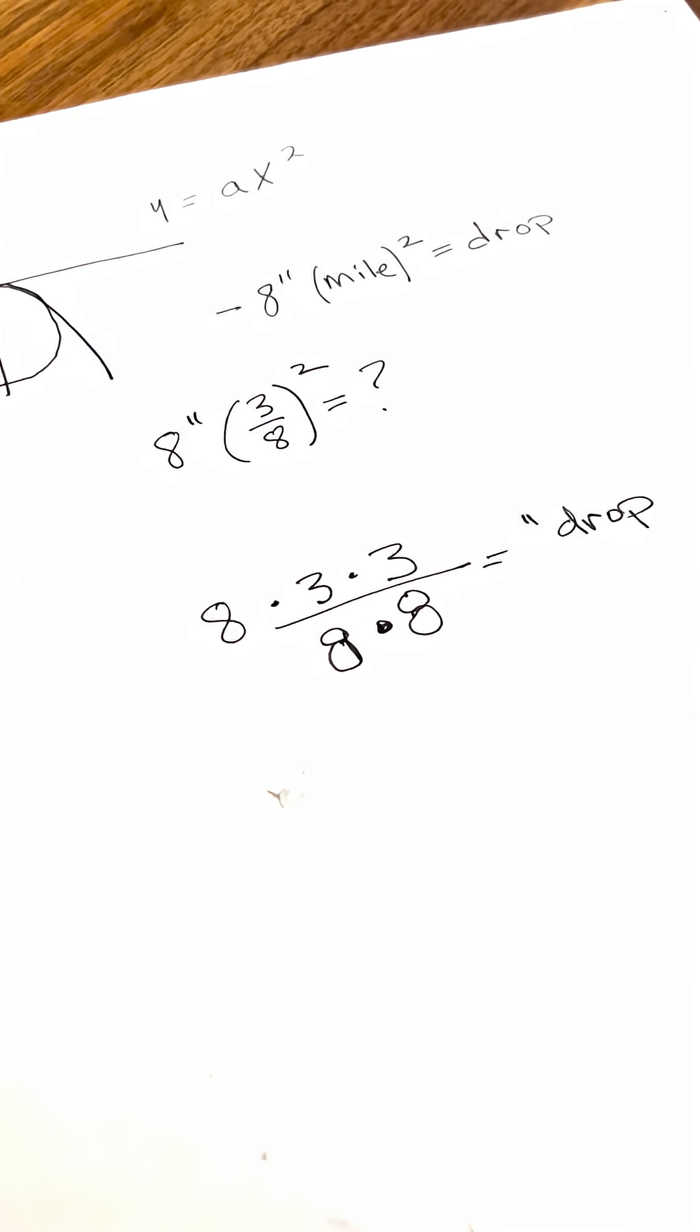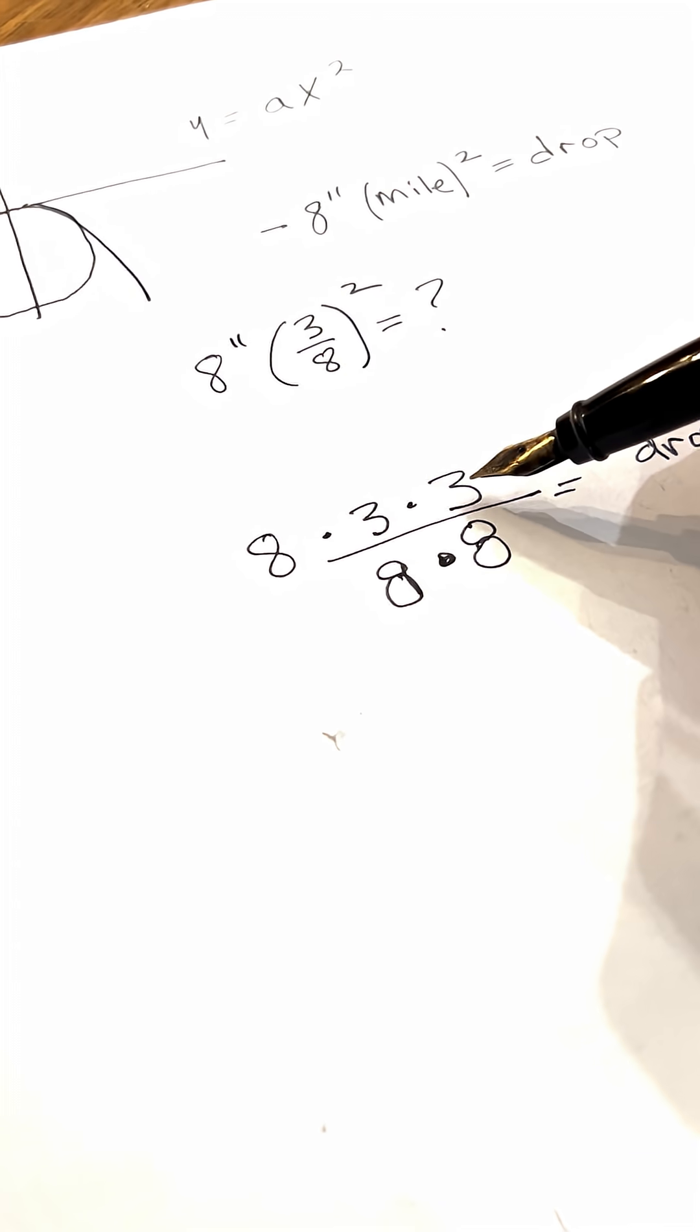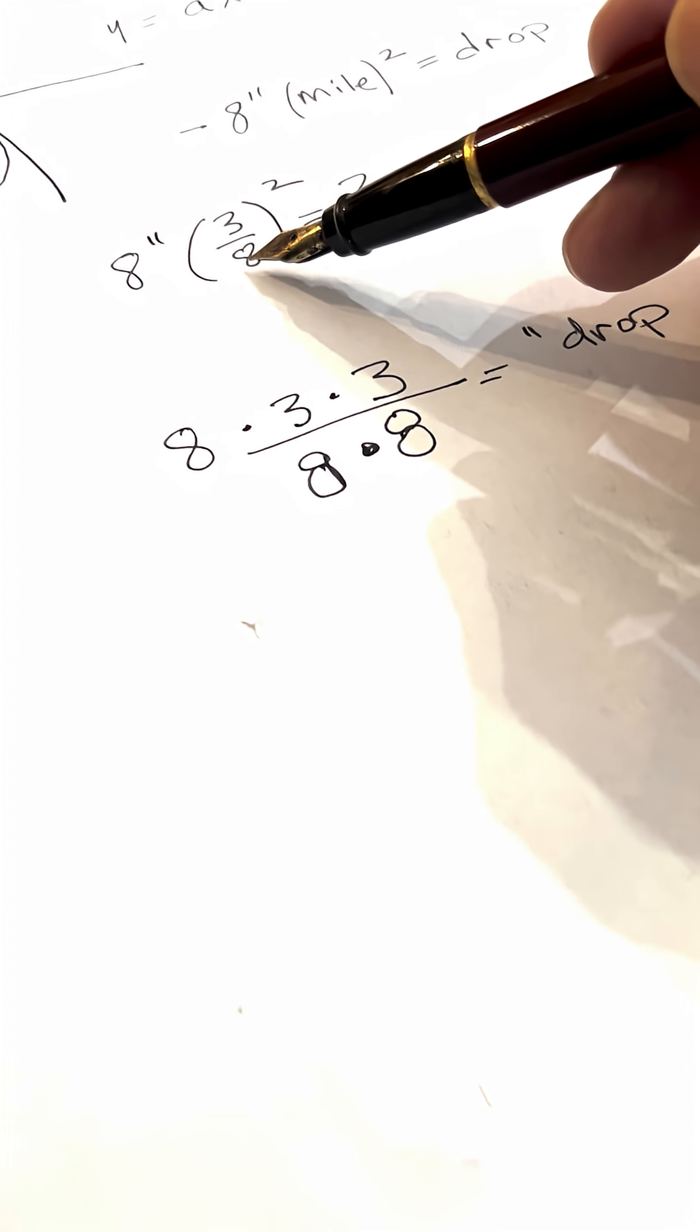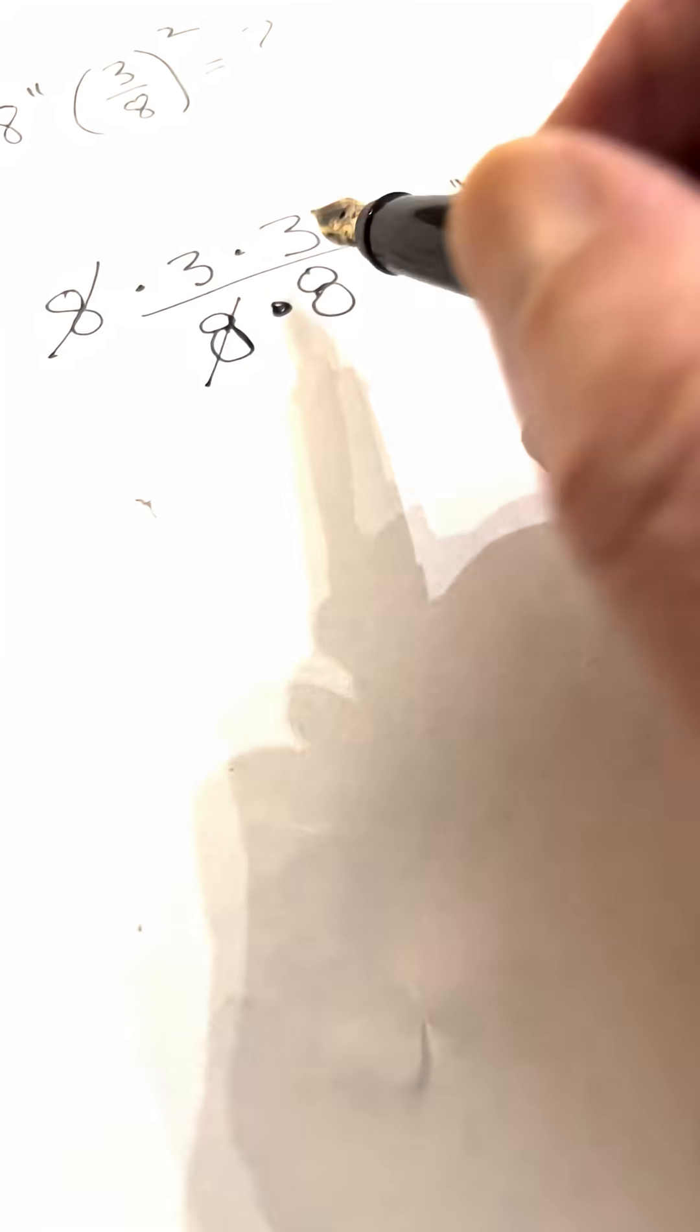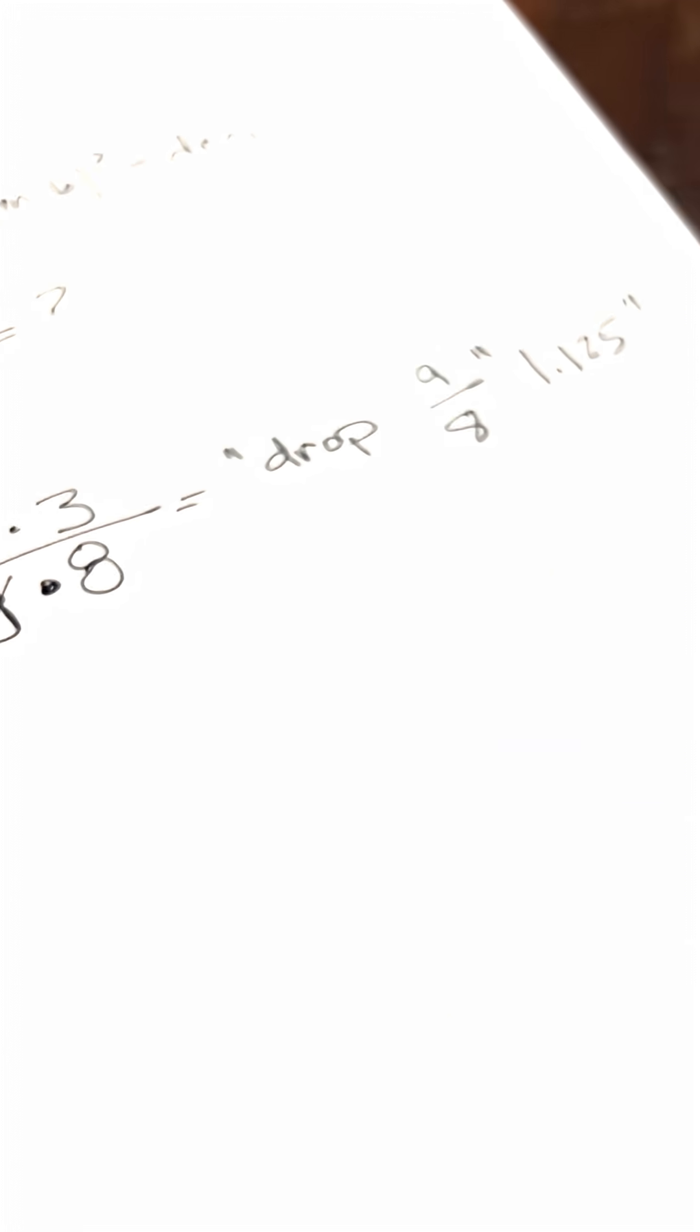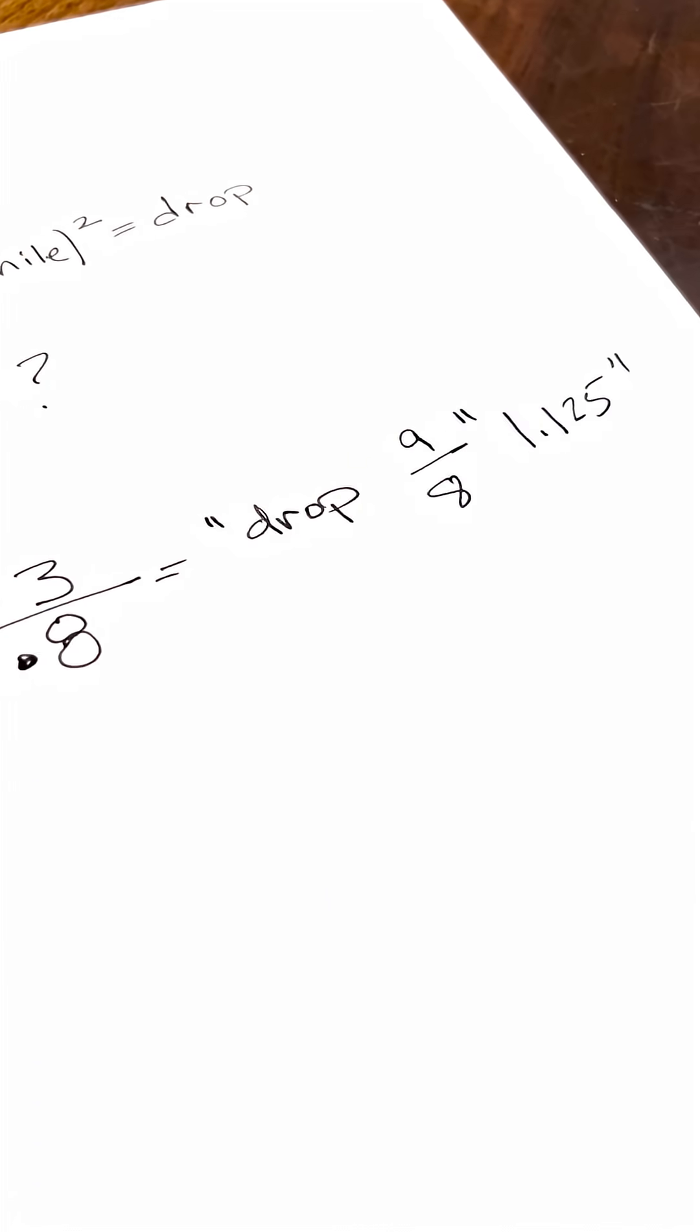So here's how you would set that up. You square the 3, or in other words multiply 3 by 3, and then you put it over the square of 8 which is 8 times 8. Now conveniently these two eighths will cancel and our drop will equal 9 over 8 inches or 1.125 inches, and that is the calculated drop of earth curve over 3 eighths of a mile.